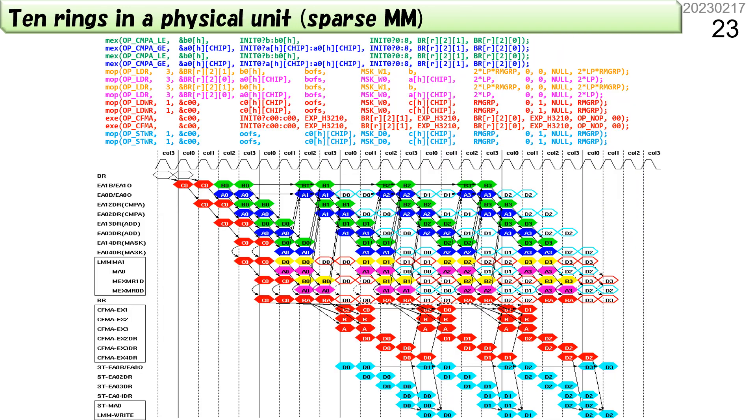This is the timing chart of sparse MM in one unit. The pipeline is fully occupied. With 60 units, the peak performance becomes 60 times better.